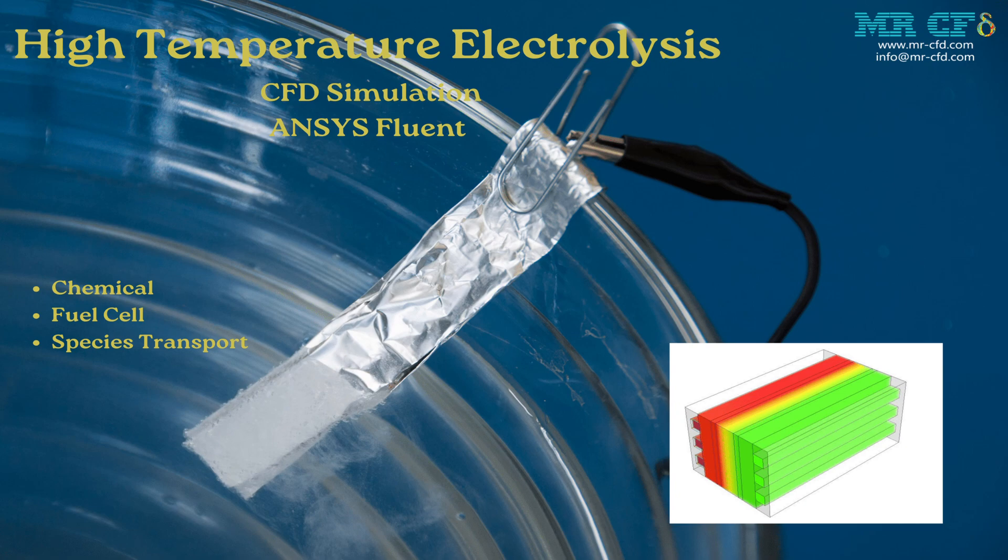After running the simulation, we analyze the results. We look at various contours like electric potential and protonic potential, which tell us how effectively our electrolyzer is functioning. We also examine the mass fractions of H2, O2, and H2O to ensure everything is converting correctly.